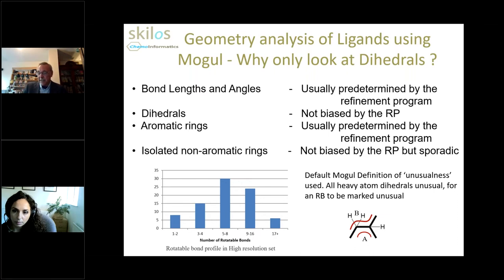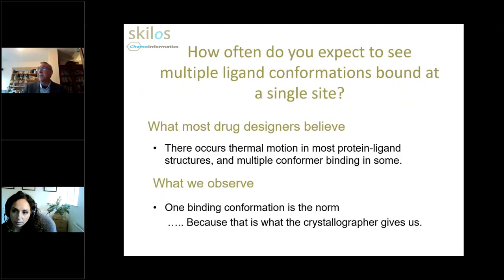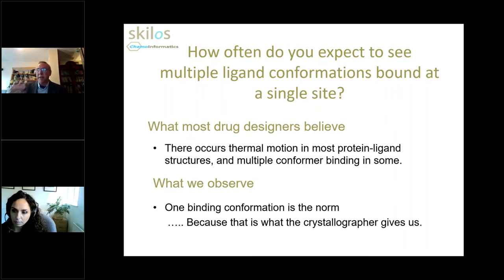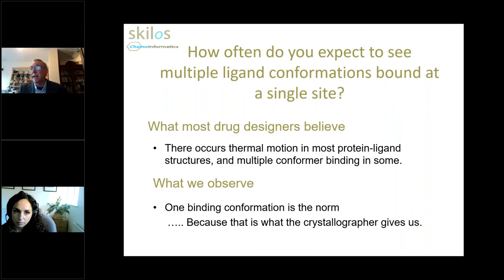Before moving to the categorization by electron density, I want to ask: how often do you expect to see multiple ligand conformations bound at a single site? It certainly was my opinion before doing this work that we see a single binding pose. We accept that there is thermal motion in most protein ligand structures, explaining why we don't always see perfect matchup between pose and electron density. We might expect multiple conformer binding in some distinct cases. What we generally observe is one binding conformation — that's what the crystallographer gives us. I got a bit of a surprise when I did this analysis.